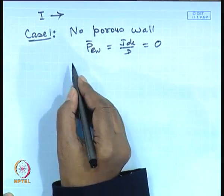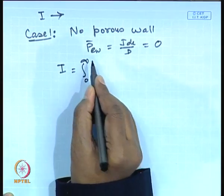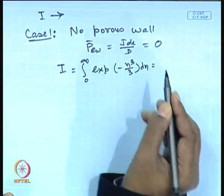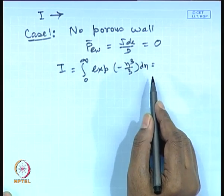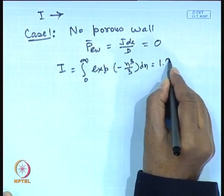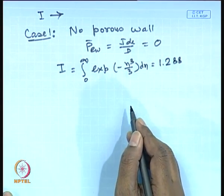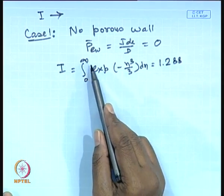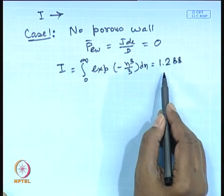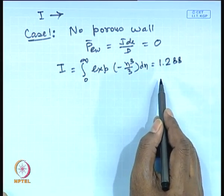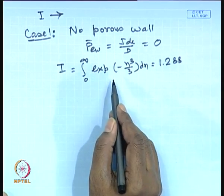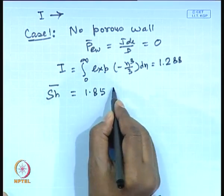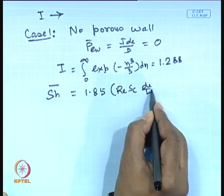In that case, you can evaluate the integral I, which becomes the integral of exp(−η³/3) dη. Evaluating numerically — using a trapezoidal rule with upper limit of about 10 or 12 — this integral turns out to be 1.288. Substituting this into the length-averaged Sherwood number expression gives 1.85 times (Re·Sc·(d_e/L))^(1/3).